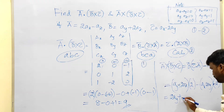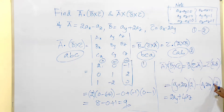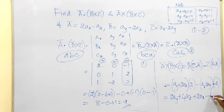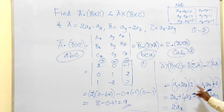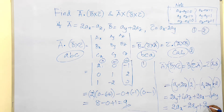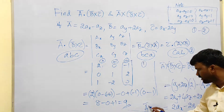Simplifying: the first part gives 2(ay + 2az) = 2ay + 4az. The second part gives −(−2)(ax − 2ay) = +2ax + 4ay (since minus into minus is plus, and plus into minus gives −4ay becomes +4ay after sign). Collecting terms: 2ax + (2ay − 4ay... correction: 2ay − 4ay) + 4az — final result is 2ax − 2ay + 4az.